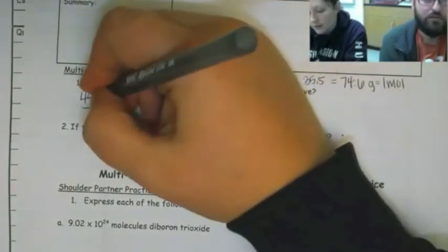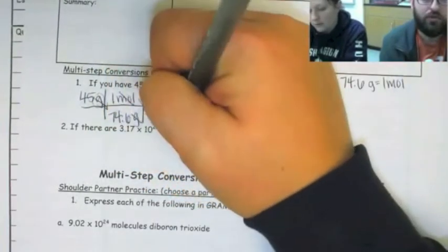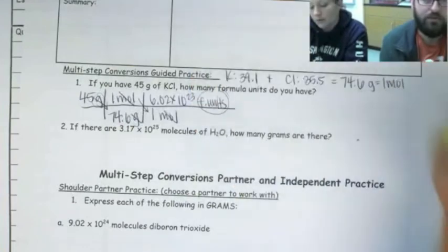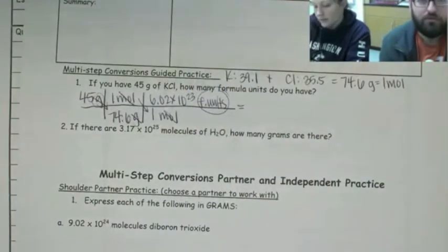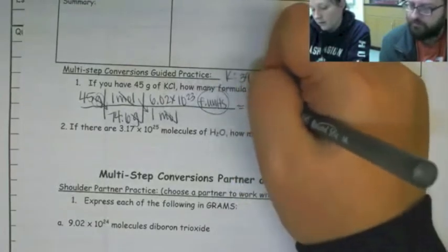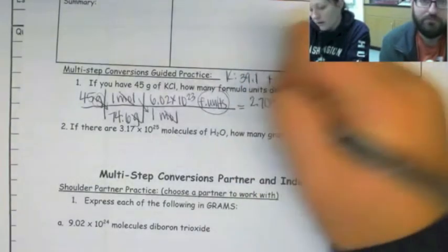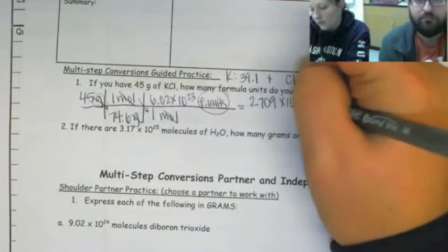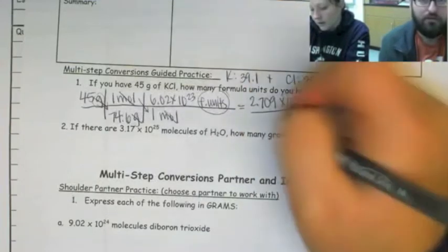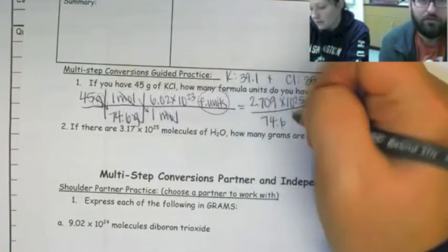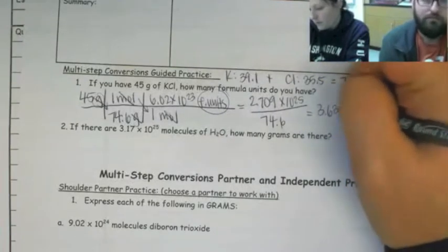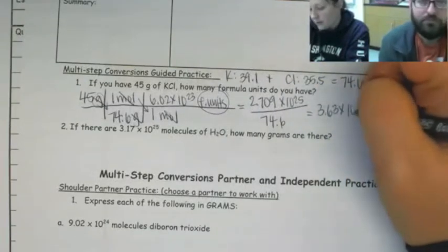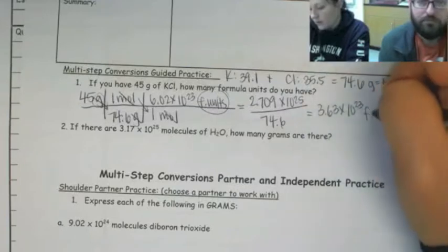So now if I look at my units, my grams cancel, my moles cancel, and I end up with formula units. Right. So I want to multiply across the top. Uh-huh. So that gives me 2.709 times 10 to the 25th. Multiply across the bottom. That gives me 74.6. Divide the top from the bottom. Okay. 3.63 times 10 to the 23rd formula units.